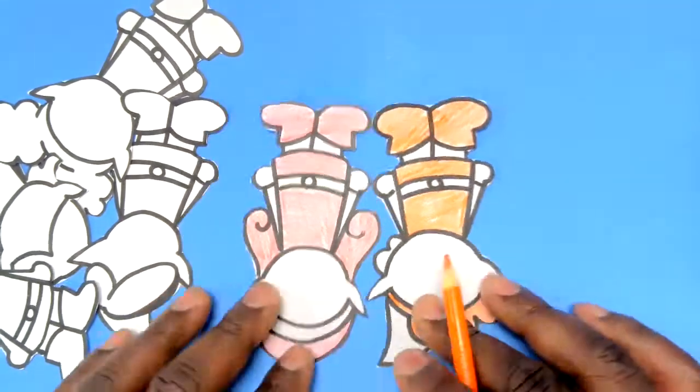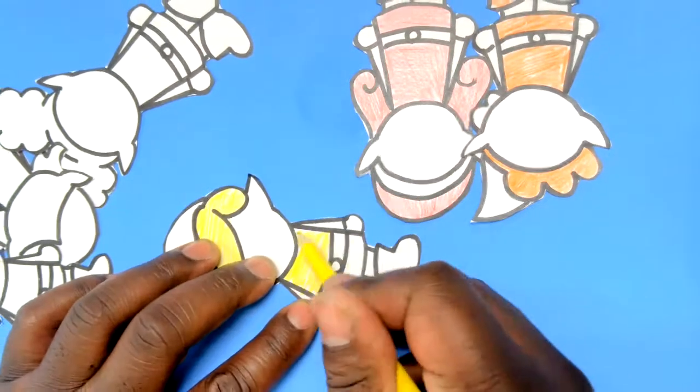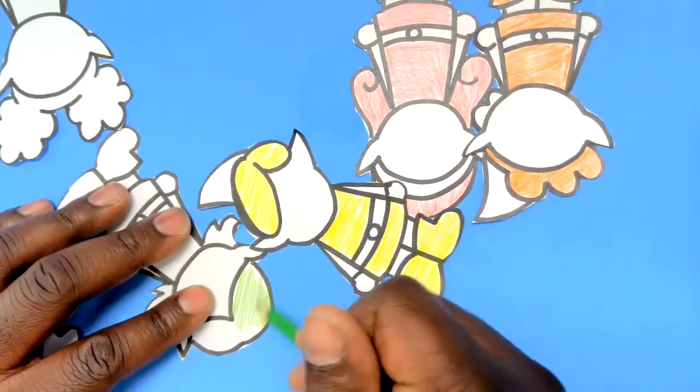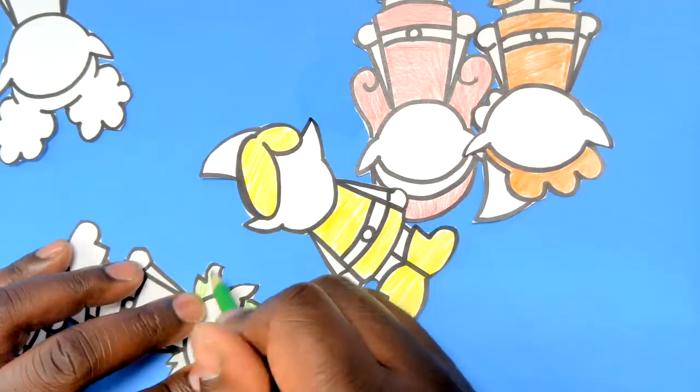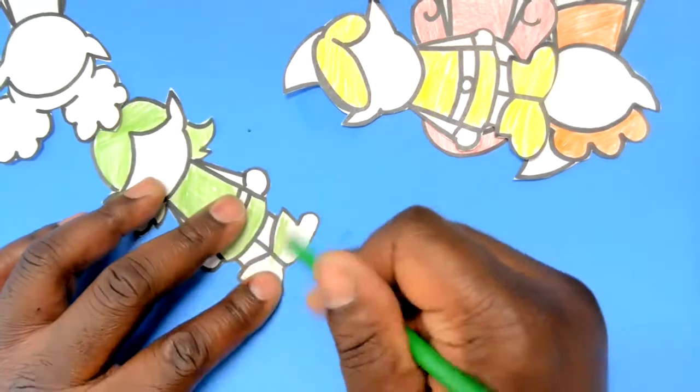So there is the paper template with the drawings of the fairies themselves. There is the pipe cleaners, the popsicle sticks, and some crayons. You'll also need some tape and scissors at some point, but that's pretty much all you'll need for this one.